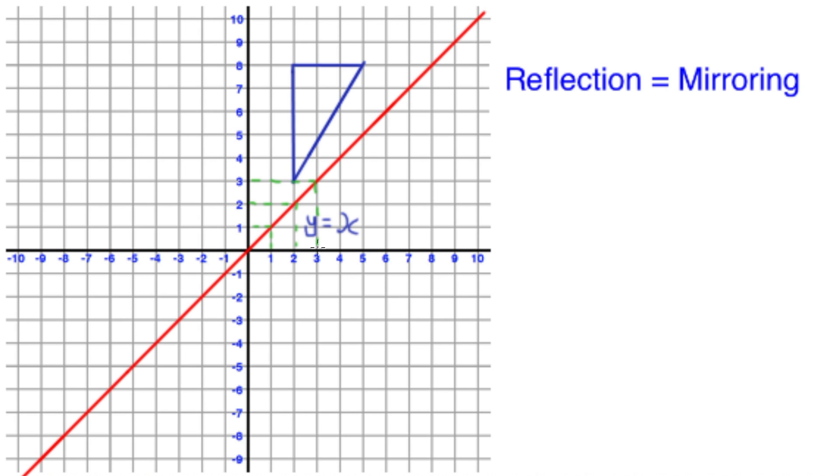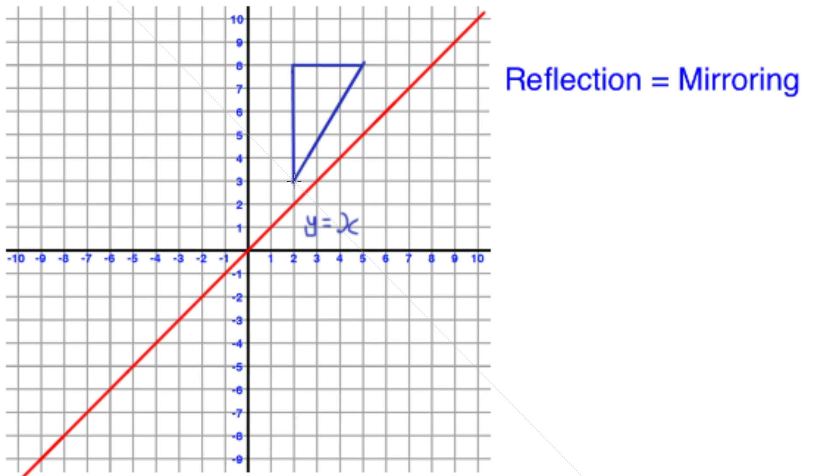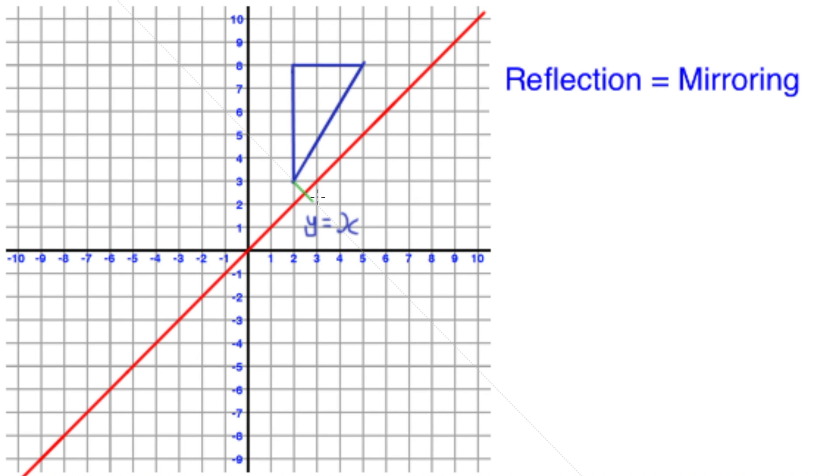If we're asked to reflect our shape using y equals x, then we can simply find the corners of our shape and use a protractor to measure its distance from the line at 90 degrees and double that. This crosses the line to find the corresponding corner of our new shape. We find that the closer or further the point from the line, the closer or further it will be from its corresponding point.